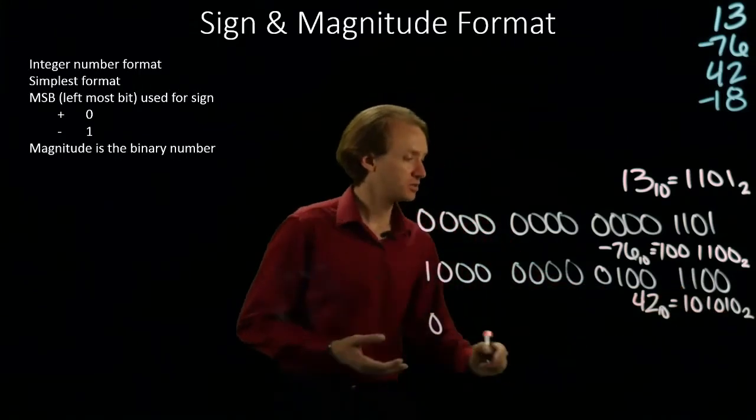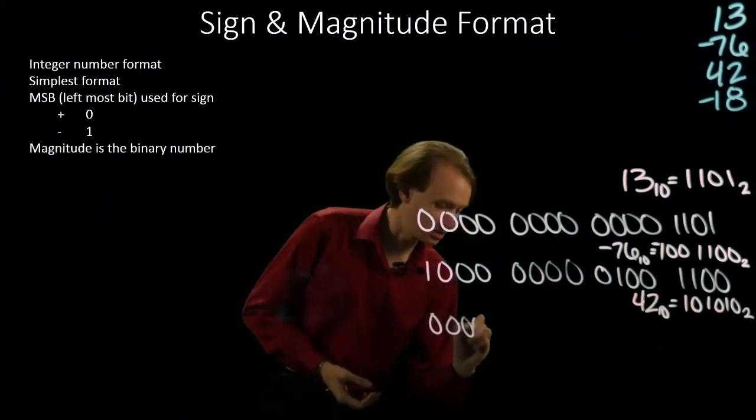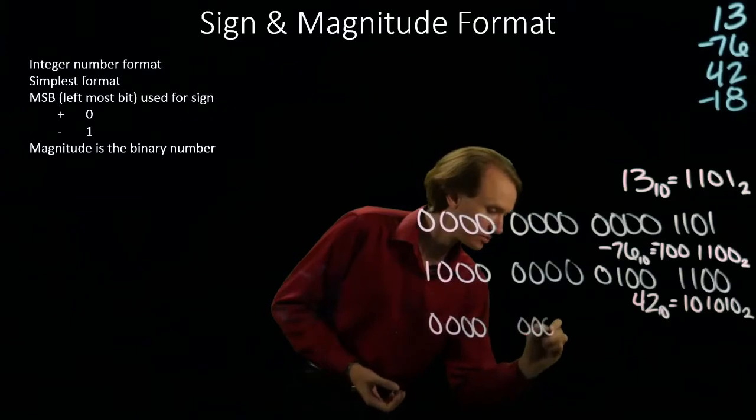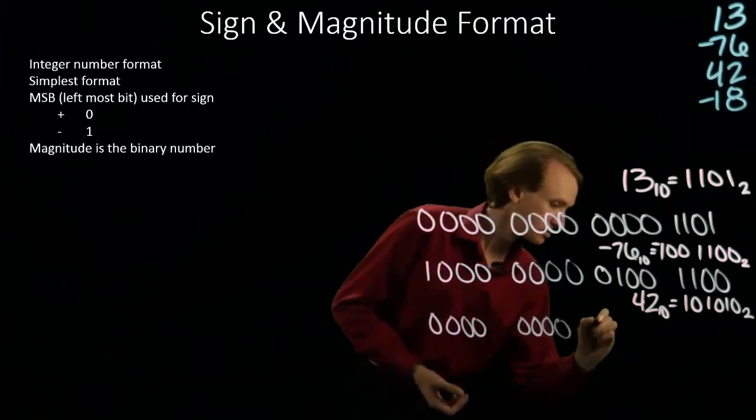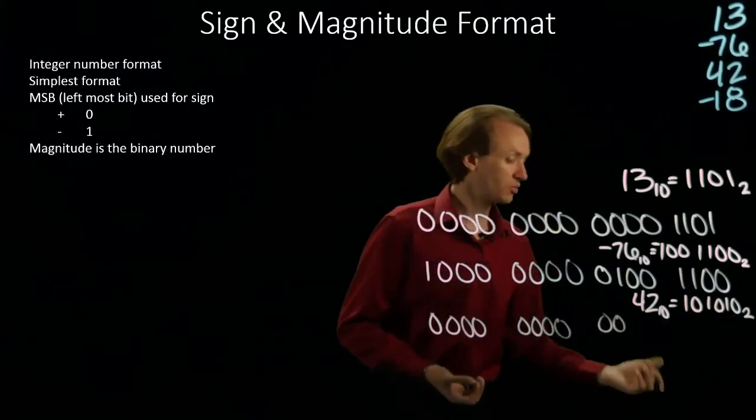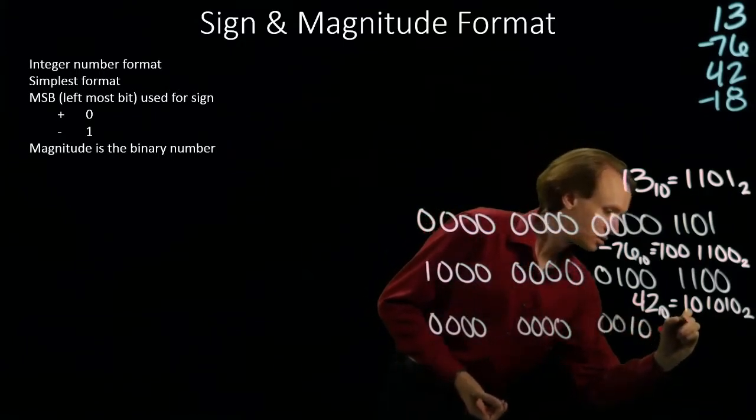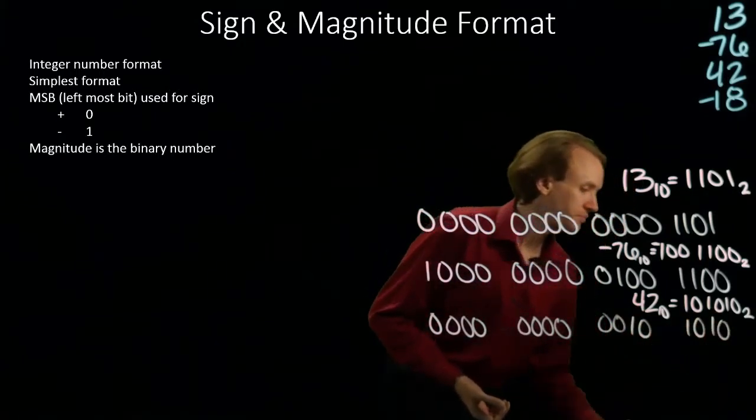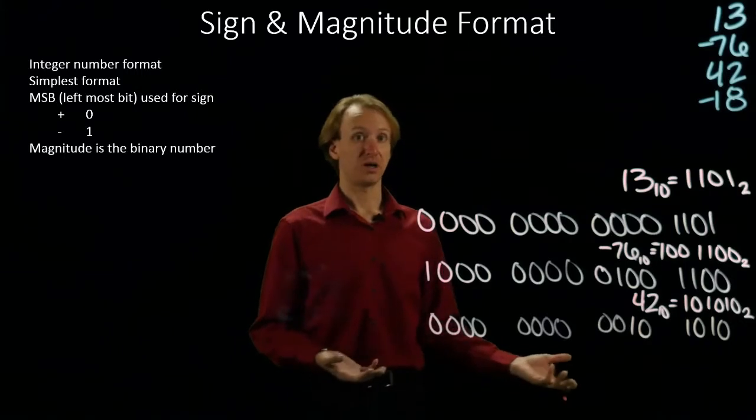Then I just need my magnitude. So I'll have a number of leading zeros and then my actual magnitude. And there's 42 in sign and magnitude.